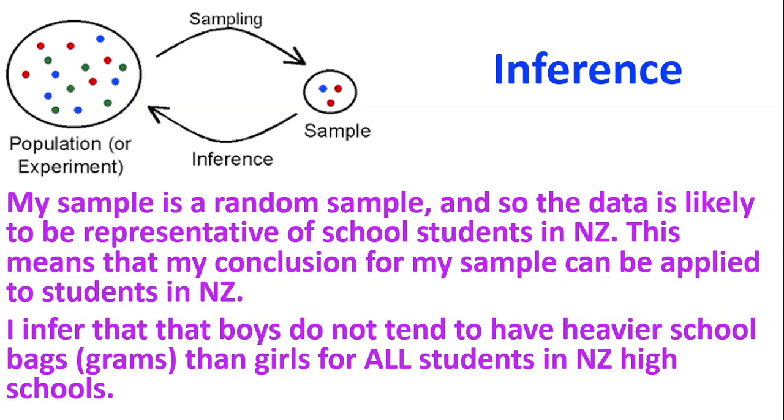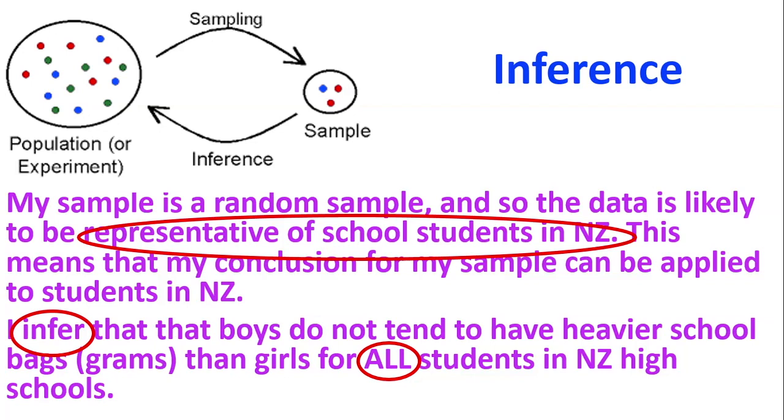Then I need to go on and make an inference. And now we've got to think, I was interested in the population and I've got a sample of data. And I found some results about my sample. And now I've got to say, well, what does it tell me about the population that I'm interested in? So because I've got a random sample, it means our data is going to be representative of all school students in New Zealand. So that means I can apply my conclusion to all of them. So my inference will be that boys do not tend to have heavier school bags than girls for all students in New Zealand. Because I don't have enough evidence, I can't make the call. So that means for my sample, and that also therefore is going to apply to the population of all students.